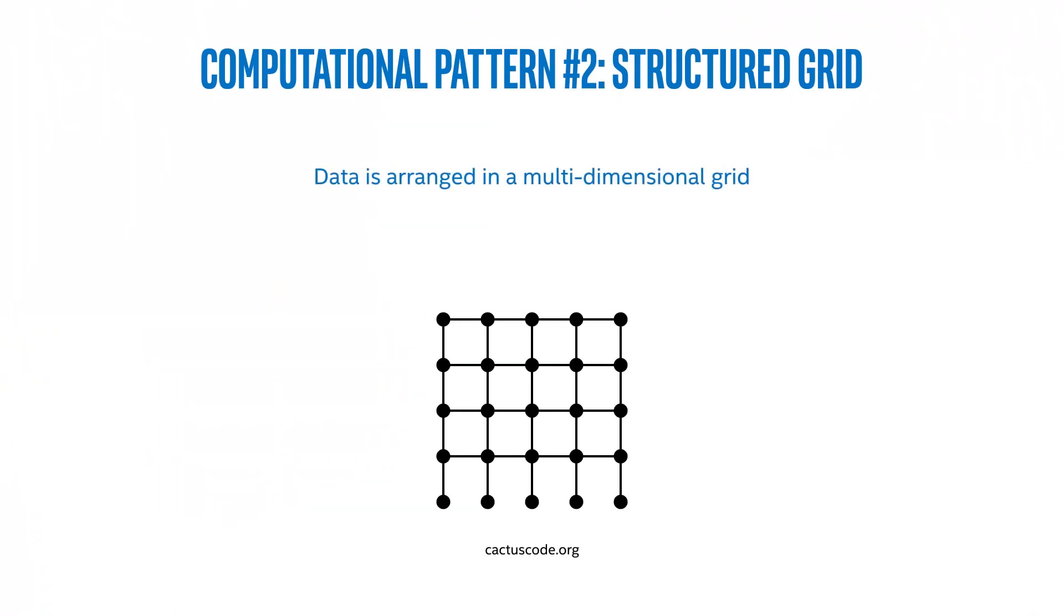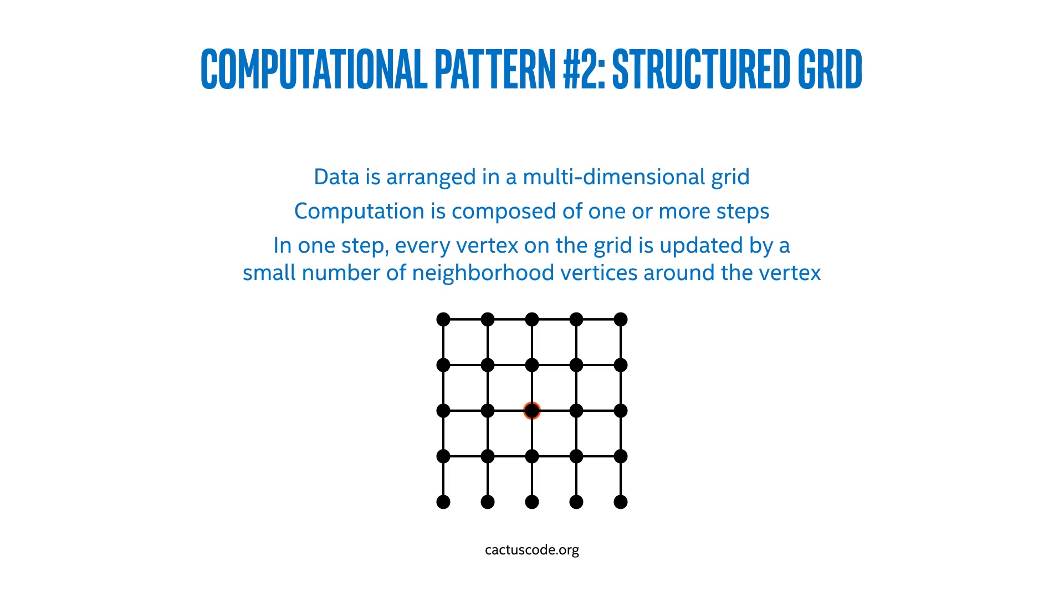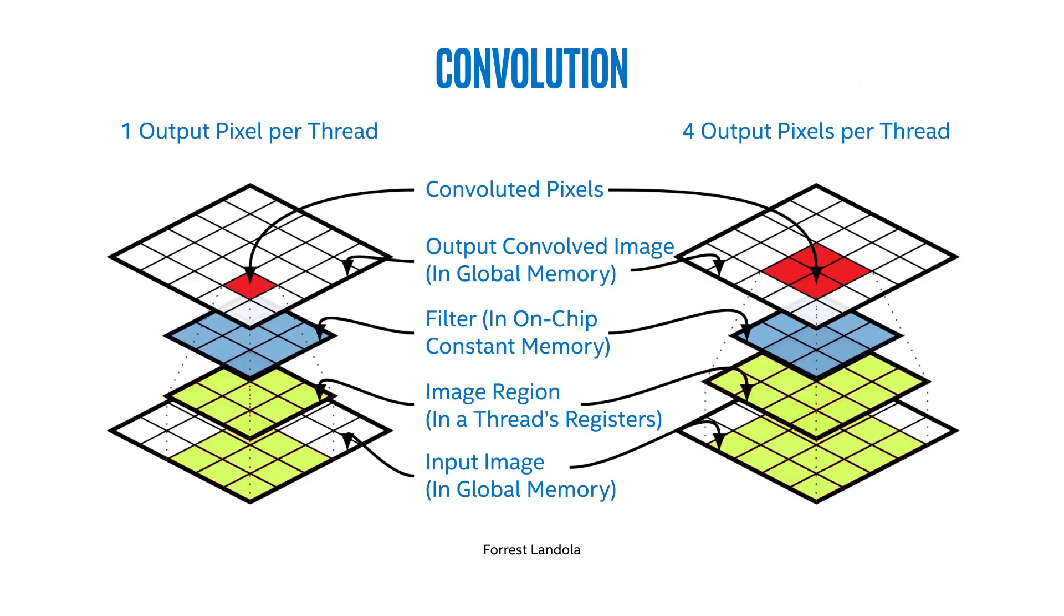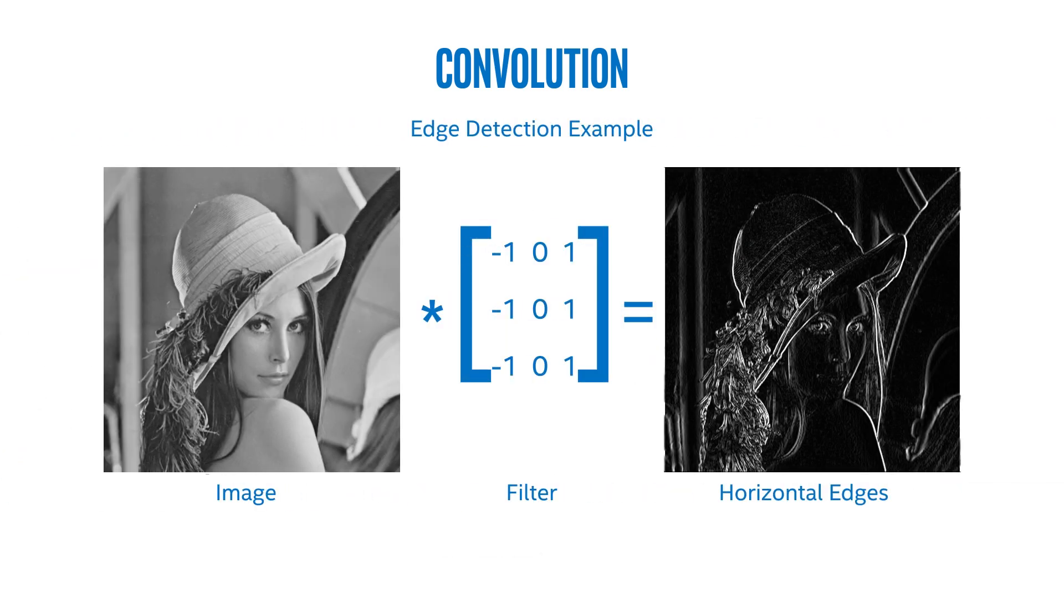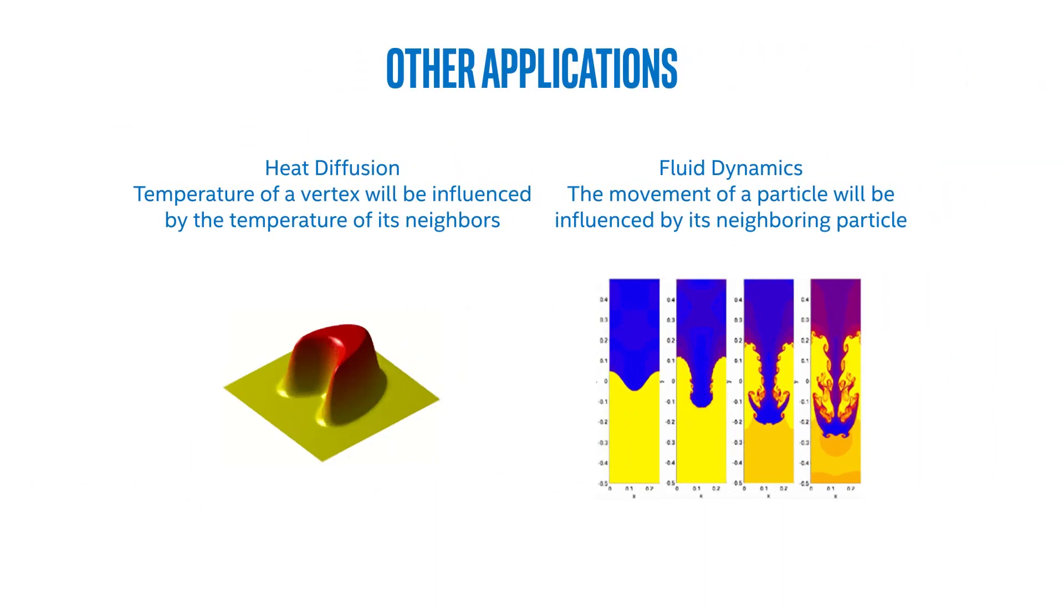Next, let's look at the computation of structured grid. So, structured grid—first we imagine our data is arranged in a multi-dimensional grid, and computation is composed in one or more steps. In one step, every vertex on the grid, and here we're highlighting the red vertex, is updated by a small number of neighborhood vertices around that vertex, here in blue. What are some examples of this? Well, here's a popular convolution. On the left side here, we see we're computing one pixel in the context of several neighboring pixels. On the right side, we're being more economical in data movement by computing four pixels in a larger neighborhood. We can use this for doing something like edge detection on an image. Applying this simple filter, we're able to identify horizontal edges in an image. Other applications include heat diffusion, where the temperature of a vertex will be influenced by the temperature of its neighbors, or fluid dynamics, where the movement of a single particle will be influenced by its neighboring particles.